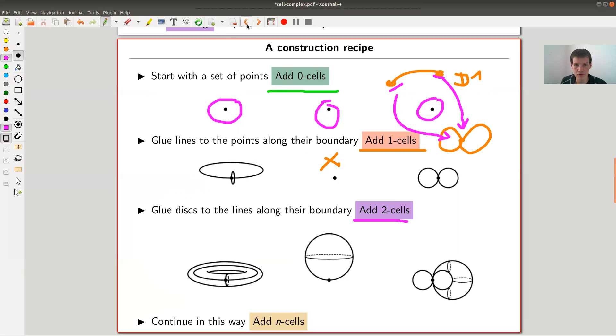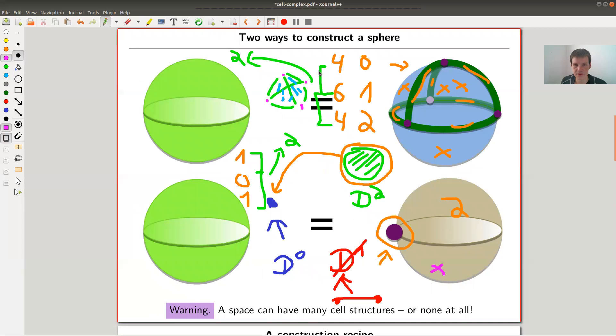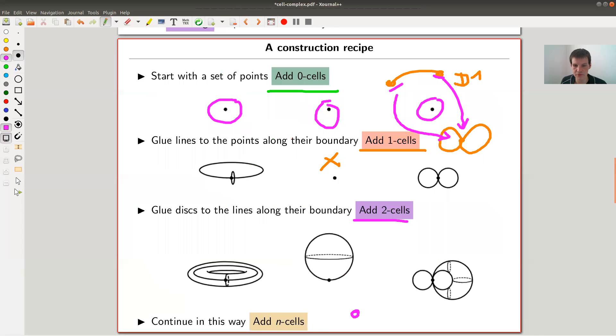So that's the procedure: you take your boundary points or your boundary and glue it to the existing structure. Then you glue in the next higher structure, the two cell.